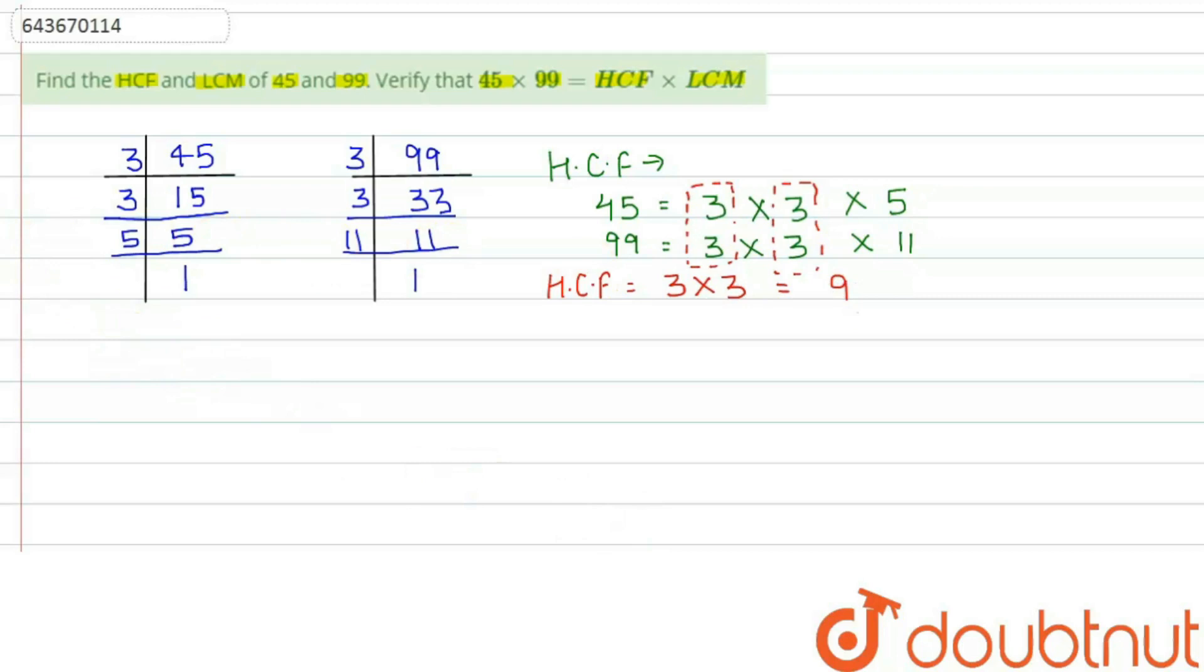Now the next thing is we will find the LCM of 45 and 99 with the help of common factor method. 45, 99. Now you can see that 45 and 99 are divisible by 3, so here we get 15 and here we get 33.